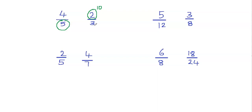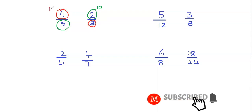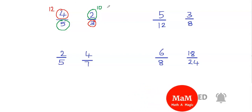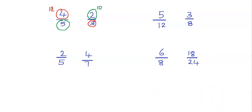Now we're going to multiply the bottom number of this fraction with the top number of this fraction. So we'll multiply 3 by 4. 3 times 4 will give me 12. We've got the product. Now we're going to compare the products. We know that 12 is greater than 10, so that means the fraction 4 fifths is greater than 2 thirds. So I'll just put the greater than sign in between.